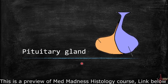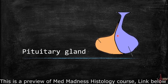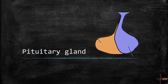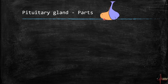Let's turn our attention to the pituitary gland — the master endocrine gland of our body — because it influences all the other endocrine glands. In turn, it is influenced by the hypothalamus and pineal gland. The pituitary gland consists of two important parts: the anterior pituitary and the posterior pituitary.